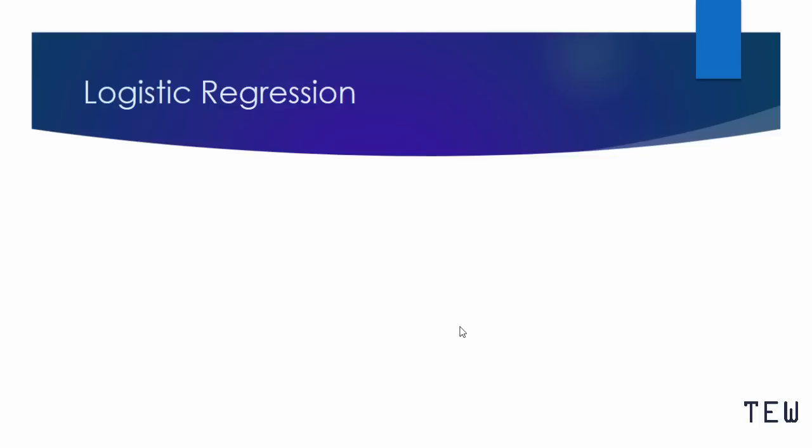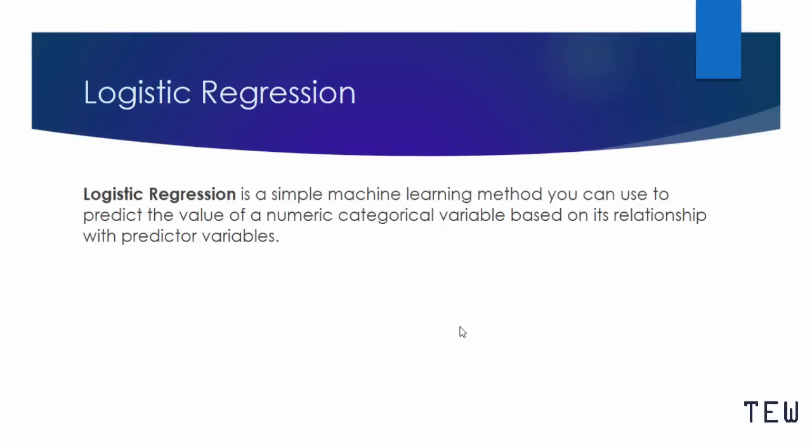Welcome back to the next lecture on logistic regression. Logistic regression is a simple machine learning method that you can use to predict an observation's category based on the relationship between the target feature and independent categorical predictive features in the dataset.